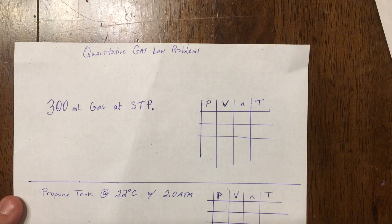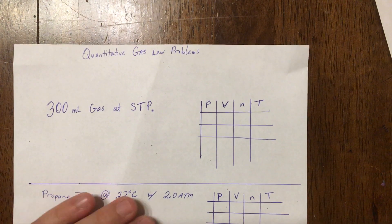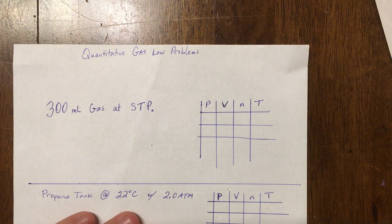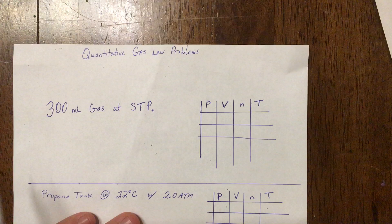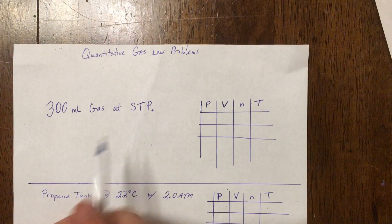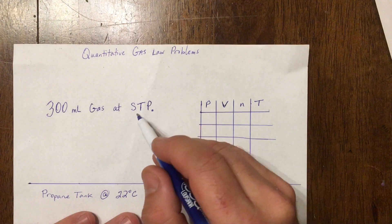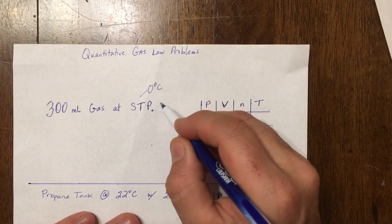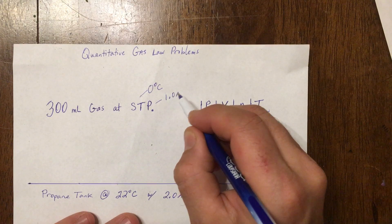All right, here we go with quantitative gas law problems. This will be the last thing we do in unit two. Don't forget you have your test coming up Thursday for periods one and two and Friday for four and five. In this first problem, we have a 300 milliliter gas at standard temperature and pressure — that's zero degrees Celsius and one atmosphere.